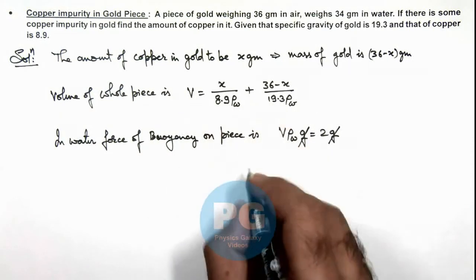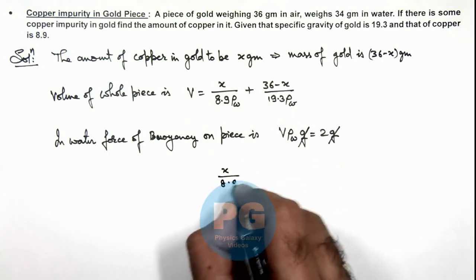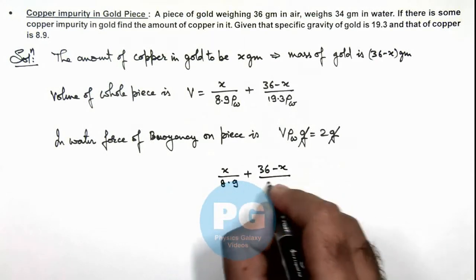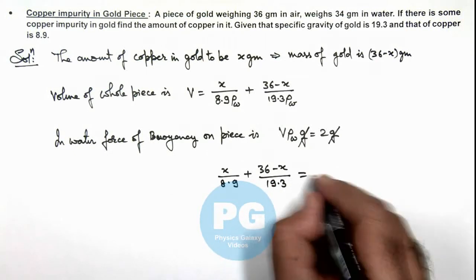So this gives x by 8.9 plus 36 minus x divided by 19.3 is equal to 2.